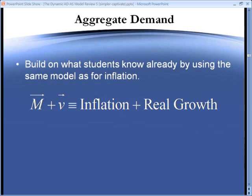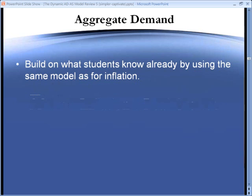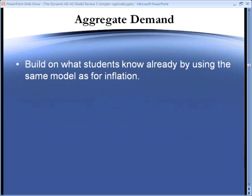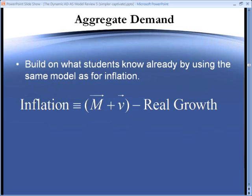Now let's rearrange this, putting inflation on one side and everything else on the other side. Now we have a simple aggregate demand model, which says that inflation is equal to nominal spending growth minus the real growth rate. So for example, if nominal spending is growing at 10% and the real growth rate is 4%, the inflation rate must be 6%.